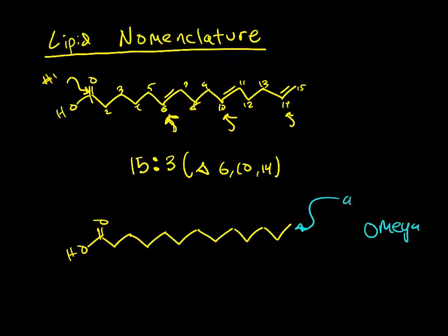So this will be our omega. This is our number 1, and then we just number all the way down. Let's say we had a double bond right here. This would be an omega 3.